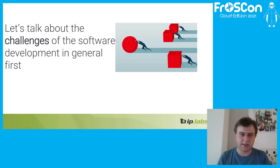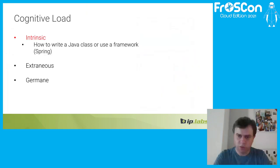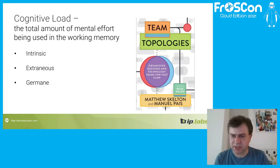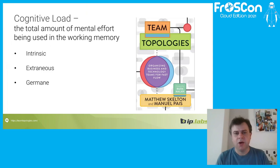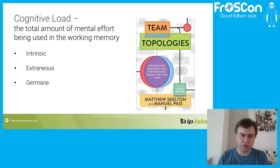Let's start with the challenges of software development in general. I really recommend the book Team Topologies by Matthew Skelton and Manuel Pais. When talking about programming, we sometimes talk about cognitive load — the total amount of mental effort being used in working memory. We differentiate between three types: intrinsic cognitive load, extraneous, and germane.